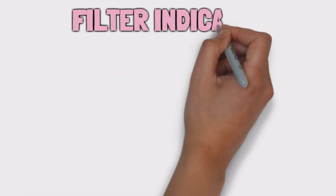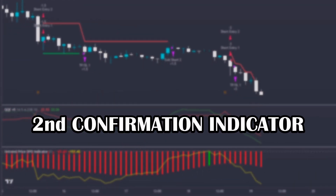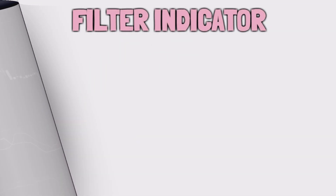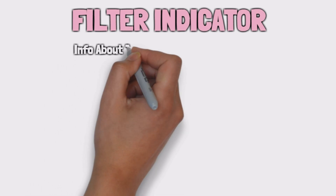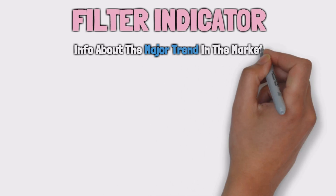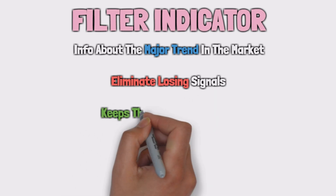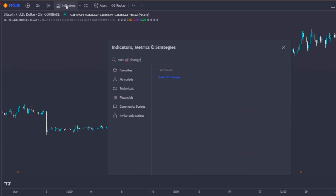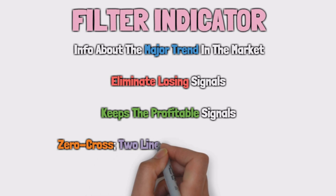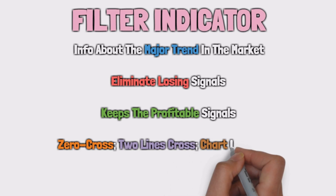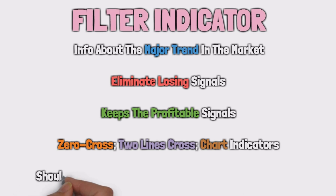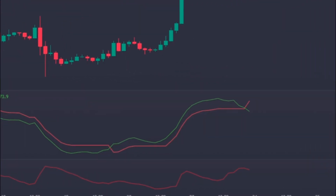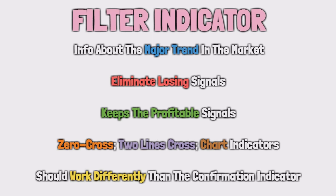Let's now talk about the filter indicator. A filter indicator, which can also be called a secondary confirmation indicator, is an indicator that has the simple purpose of eliminating false and losing signals given by our confirmation indicator. The qualities of a good filter indicator are: it provides information about the major trend present in the markets; it should eliminate the largest number of false and losing signals while maintaining the profitable entry signals. It can be a zero-cross indicator like the rate of change, a two-lines cross indicator like the Aroon, or a chart indicator like the super trend. Usually, we should look for an indicator that works differently than our confirmation indicator. In my case, as the KQE MT4 is a two-lines cross indicator, I will give preference to zero-cross or chart indicators.